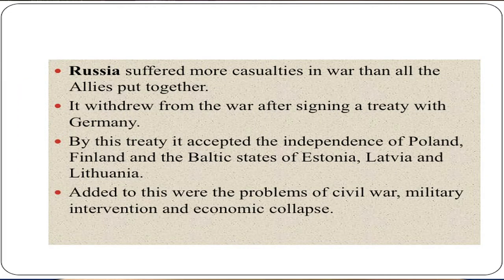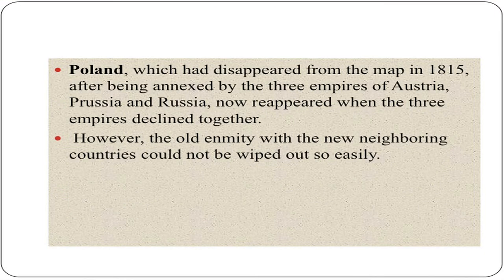Russia suffered more casualties in war than all the Allies put together. It withdrew from the war after signing a treaty with Germany, by which it accepted the independence of Poland, Finland, and the Baltic states of Estonia, Latvia and Lithuania. Added to this were the problems of civil war, military intervention and economic collapse. Poland, which had disappeared from the map in 1815 after being annexed by the three empires of Austria, Prussia and Russia, reappeared when the three empires declined together. However, the old enmity with new neighboring countries could not be wiped out so easily.